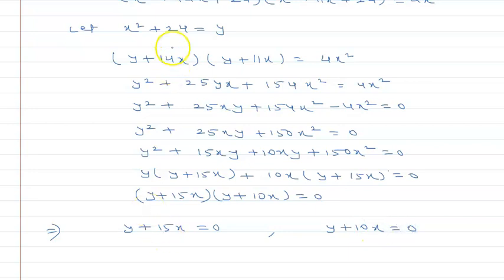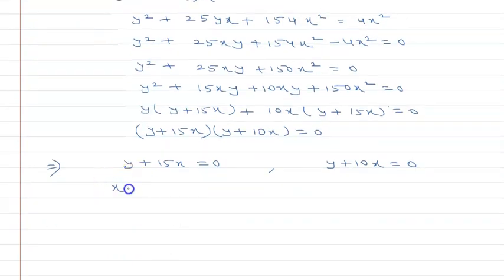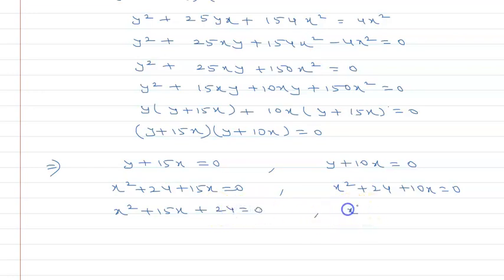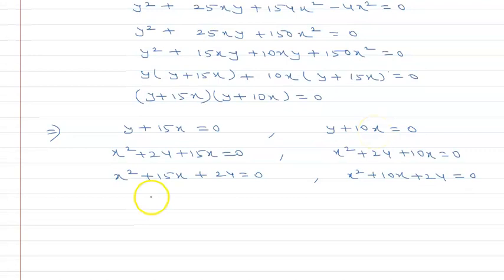Now substituting back y equals x squared plus 24: we get x squared plus 24 plus 15x equals zero, and x squared plus 24 plus 10x equals zero. So the two equations are x squared plus 15x plus 24 equals zero, and x squared plus 10x plus 24 equals zero.